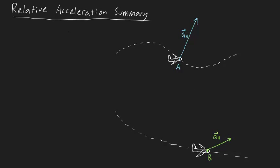The acceleration of A relative to B is given by this formula. AA is equal to AB plus AA slash B.